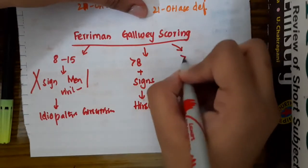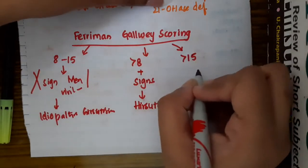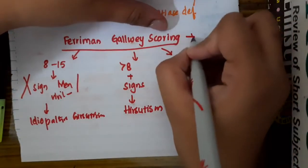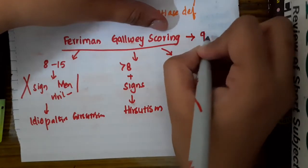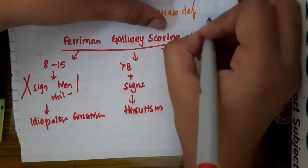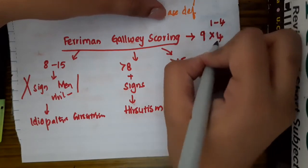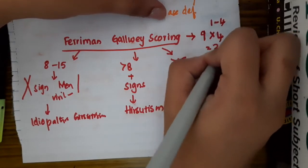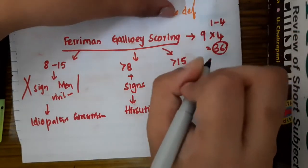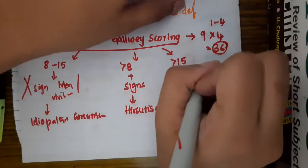Then, if it is more than 15, we are giving a score of 9 areas and we are giving score from 1 to 4. So, maximum score will be 36. Among the maximum score of 36, if it is more than 15...